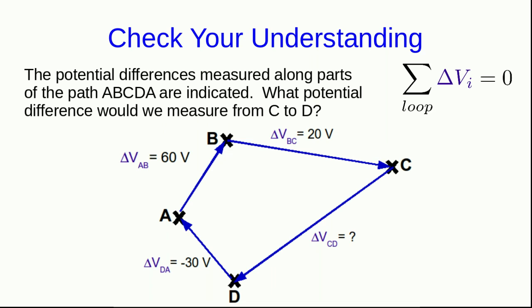Here's a simple question to check whether you're understanding the loop law. So here is a set of points, and a path is indicated from A to B to C to D and back to A again, and so that is a closed path. And the potential differences that would be measured from A to B and B to C and D to A are indicated, and all you have to do is figure out what potential difference must exist between points C and D.